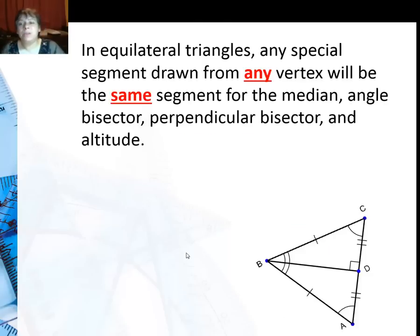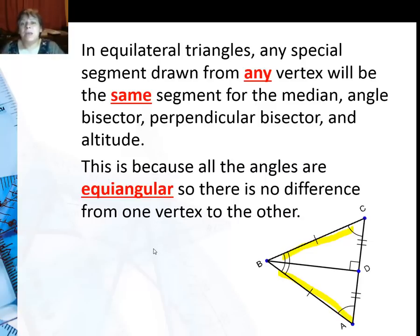Now, looking at equilateral triangles, any special segment drawn from any vertex will be the same segment. Basically, because you're creating an isosceles triangle right here, through any angle you create you're cutting it into two 30 degree angles. So because all the angles are equiangular, there's no difference from one vertex to another.